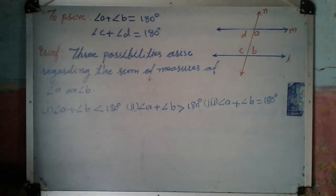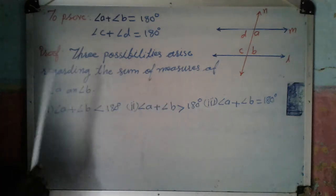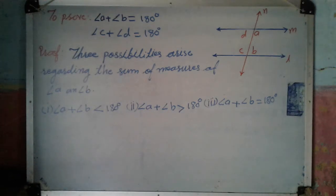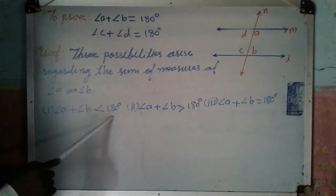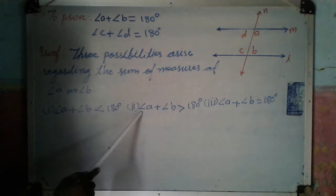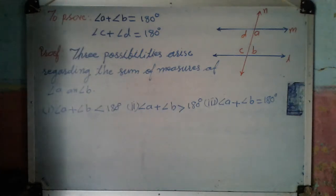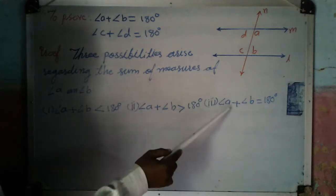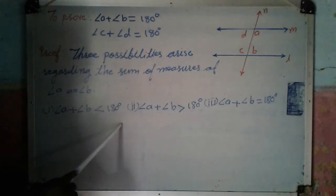In the proof, three possibilities arise regarding the sum of measures of angle A and angle B. The first possibility is: angle A plus angle B is less than 180 degrees. The second possibility is: the sum of angle A and angle B is greater than 180 degrees. And the third possibility is: the sum of angle A and angle B is equal to 180 degrees. We will consider all three possibilities one by one.